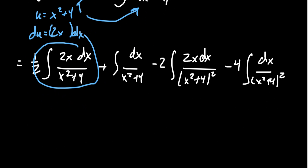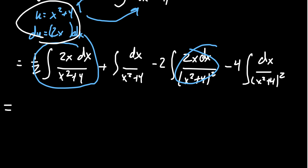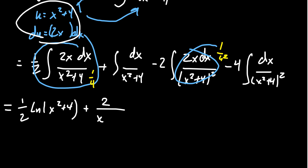The first and third integrals are perfect for u-substitution. The first one becomes 1/u, and the third becomes 1/u². By u-substitution, the first gives us one-half the natural log of x² + 4. The third, by the power rule, gives negative 1/u, so we get plus 2 over x² + 4.